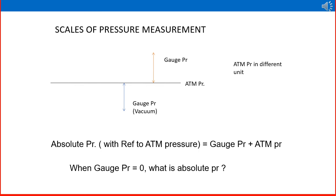Gauge pressure is above atmospheric pressure — it is a positive pressure. Vacuum is below atmospheric pressure — it is a negative pressure. Absolute pressure, with reference to absolute zero, equals gauge pressure plus atmospheric pressure. These are the various scales we use for pressure measurement.